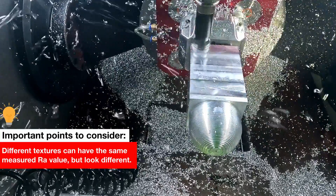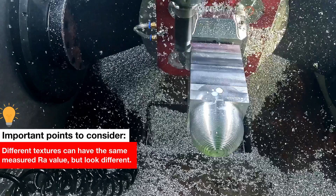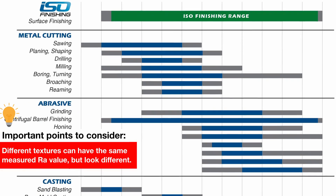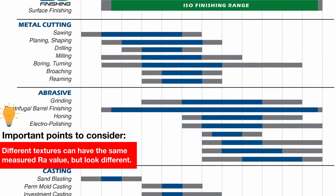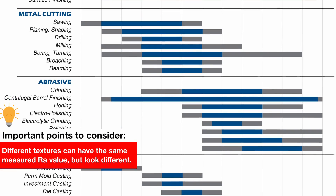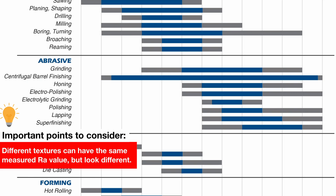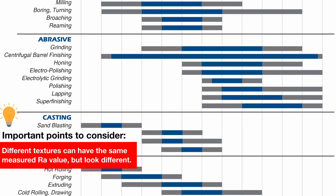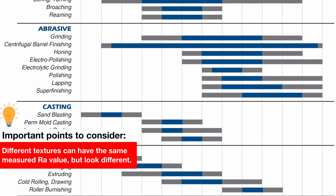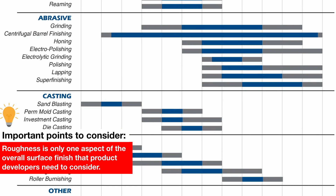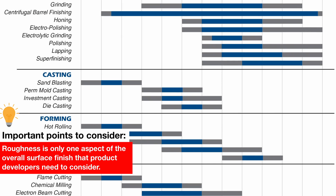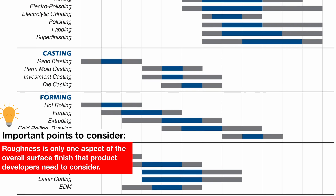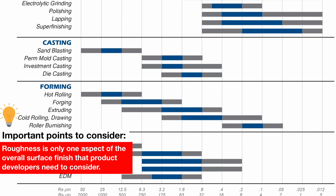Secondly, be aware that different textures can have the same measured RA value but look completely different. Think swirls, grooves, crosshatching, diamond plate, etc. That's why roughness is only one aspect of the overall surface finish that product developers need to consider.